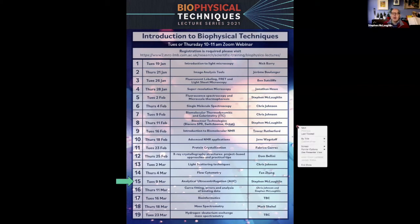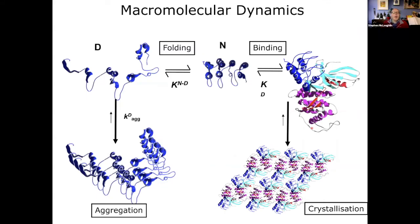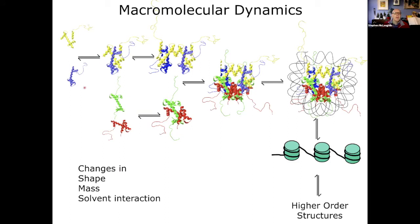Today I'm going to talk about analytical centrifugation. We're going to think about the processes that molecules can go through in their lifetime — a protein that might fold and bind onto something, aggregate, crystallize, or be involved in assembly, like forming a nucleosome. There are going to be big changes in shape, mass, and solvent interactions, and one way we can look at that is by using AUC, or analytical ultracentrifugation.